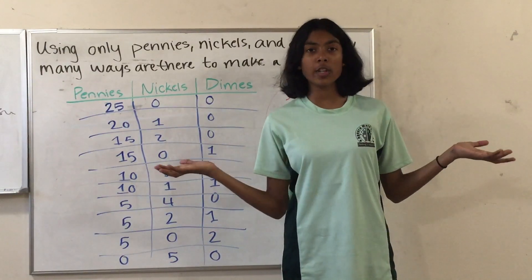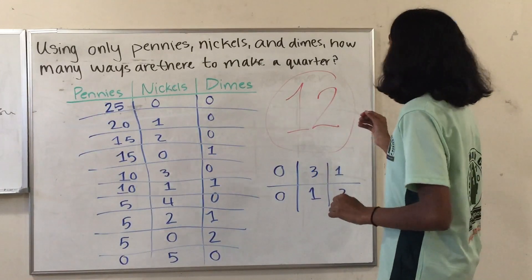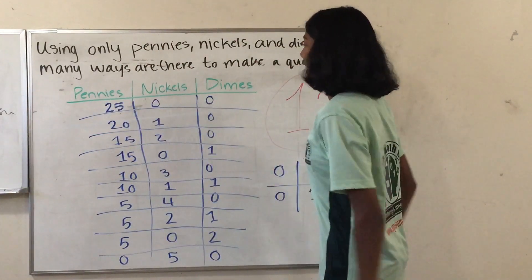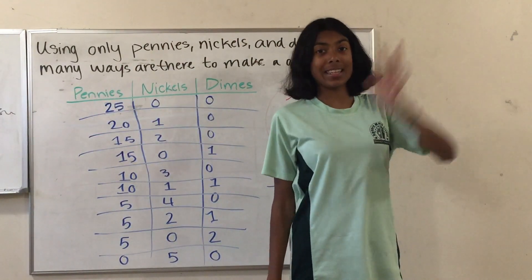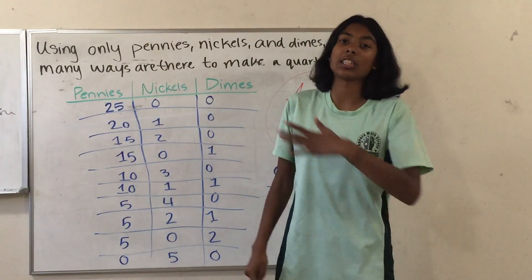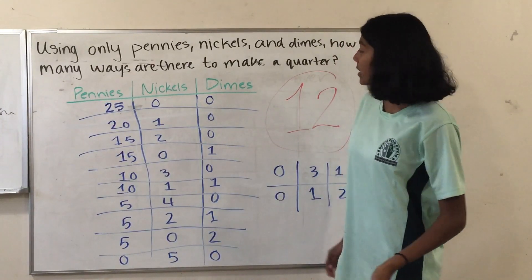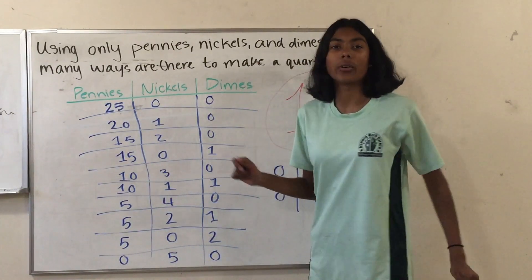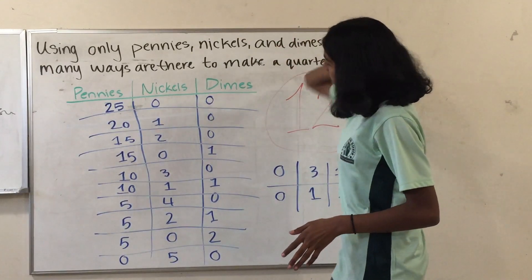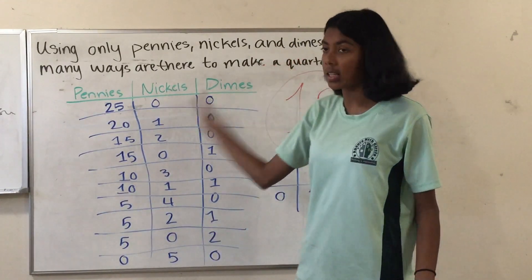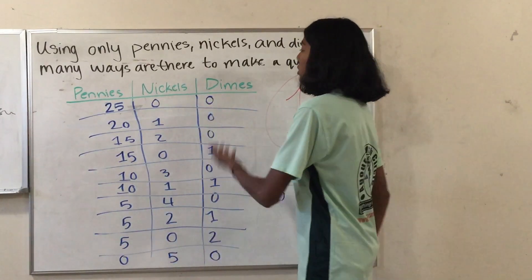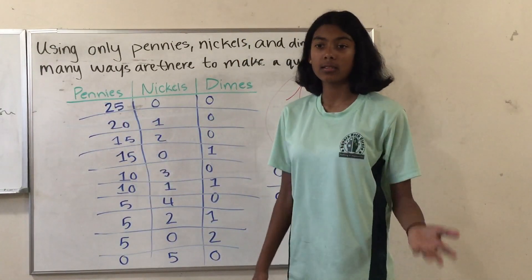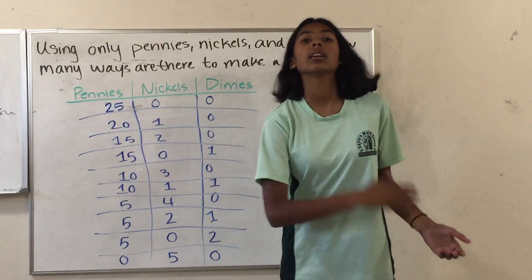So now let's move on to our first problem. It says: using only pennies, nickels, and dimes, how many ways are there to make a quarter? I made an entire chart for us. The easiest way to do it is just list out all the possible ways in a nice, neat, organized fashion. We want a total of 25 cents because a quarter equals 25 cents. We start off with 25 pennies and then slowly decrease our number of pennies and adjust nickels and dimes accordingly to get a total of 25.